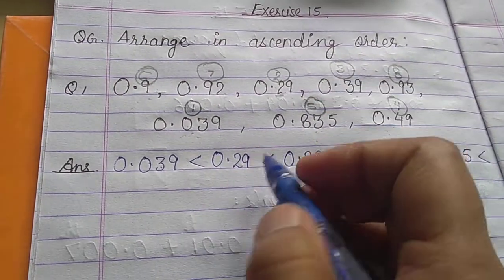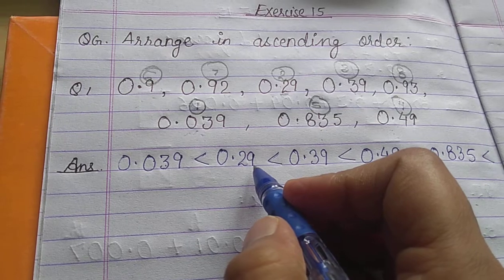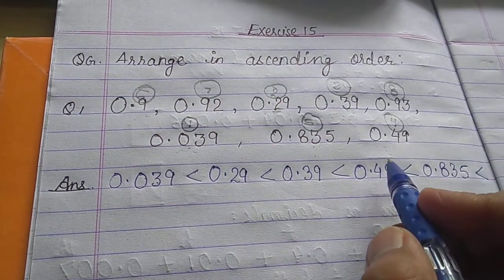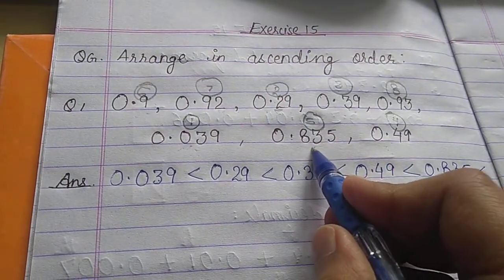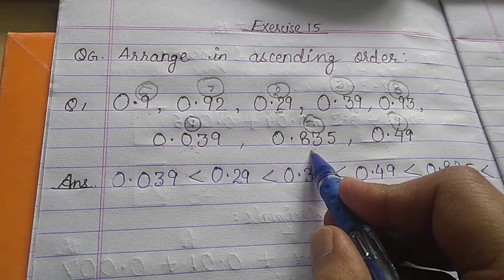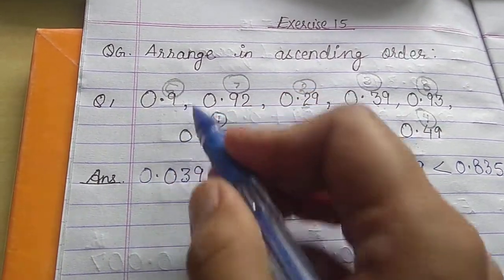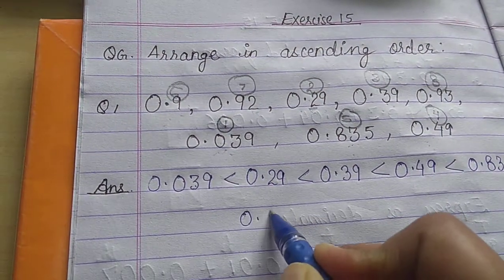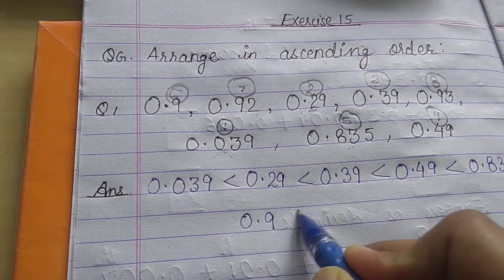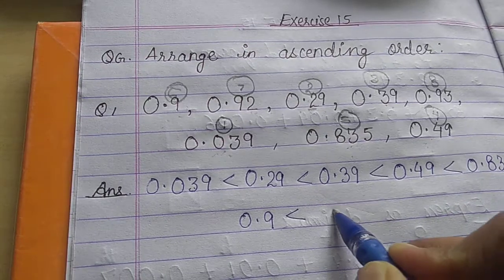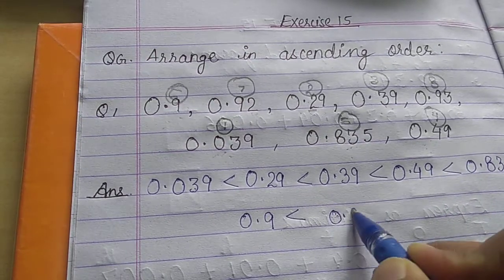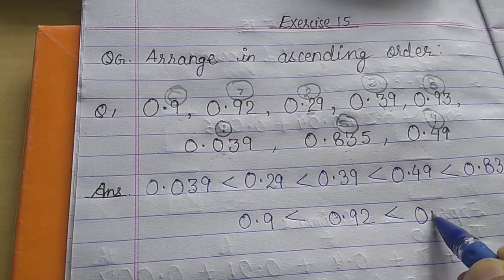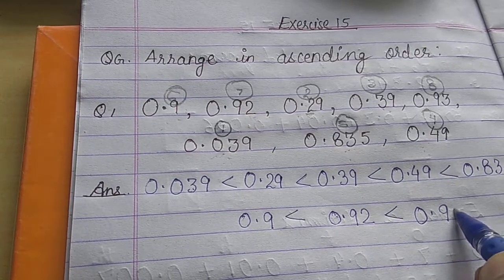Continuing below: after 0.835, the sixth number will be 0.9, which is smaller than 0.92, which is smaller than 0.93.